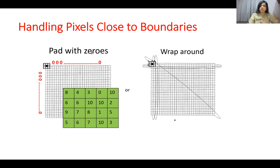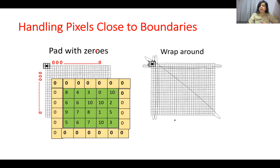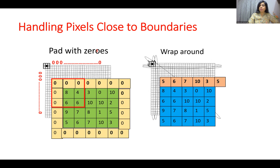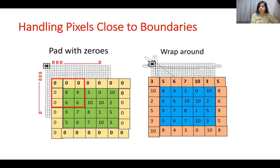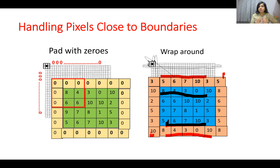What is padding with zeros? Suppose this is an image — you surround the entire image with zeros. What is wrap-around? In wrap-around, whatever is on one edge line is replicated on the opposite side. Whatever is at the bottom is replicated on the top, and corners are replicated similarly — for example, this value 10 is replicated at the corresponding position.